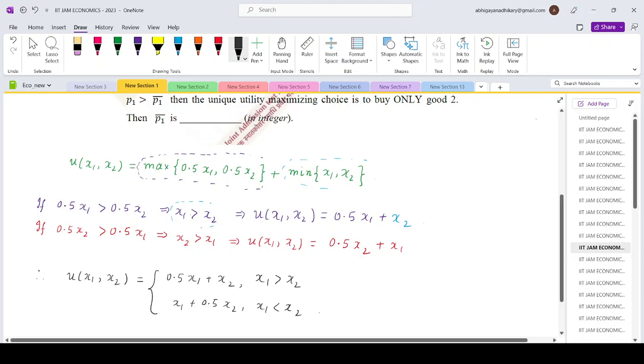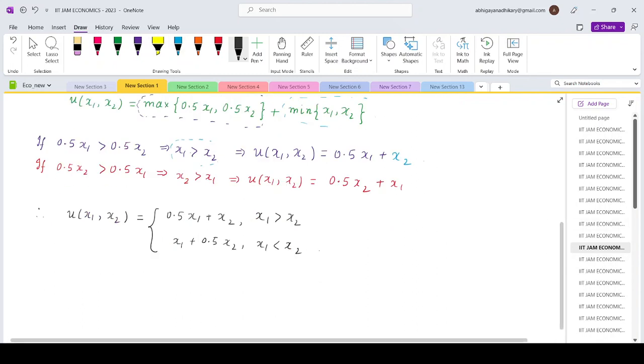So essentially it is representing the perfect substitutes kind of a utility function, but it has two forms depending upon the condition of x₁ and x₂.